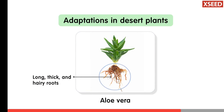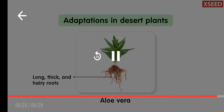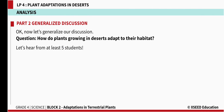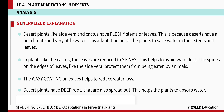Its roots spread out wide to absorb water. Now let's do the generalized discussion. How do plants growing in deserts adapt to their habitat? Desert plants like aloe vera and cactus have fleshy stems or leaves. This is because deserts have a hot climate and very little water. This adaptation helps the plants to save water in their stems and leaves.